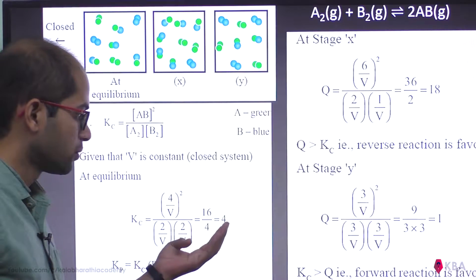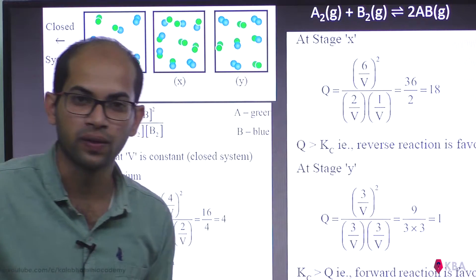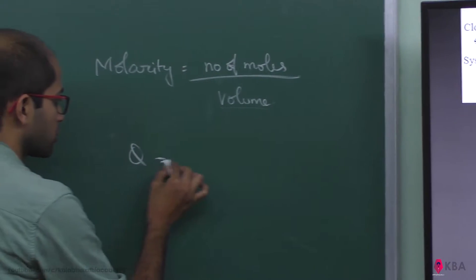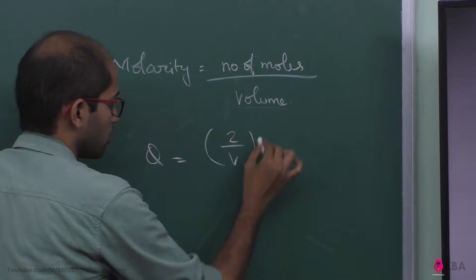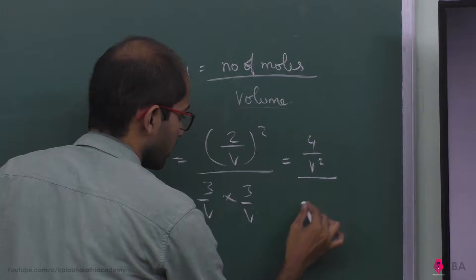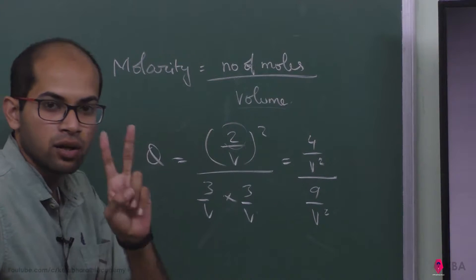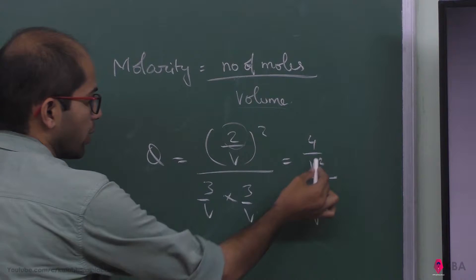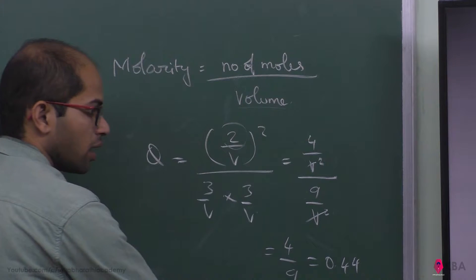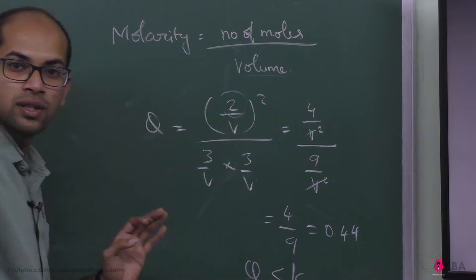Kc is greater than Q. 4 is greater than 1 (or 0.44). So the forward reaction is favored. Q is less than Kc, so in scene Y, one of the reactants is in excess and reactant concentration is added, meaning forward reaction is favored.